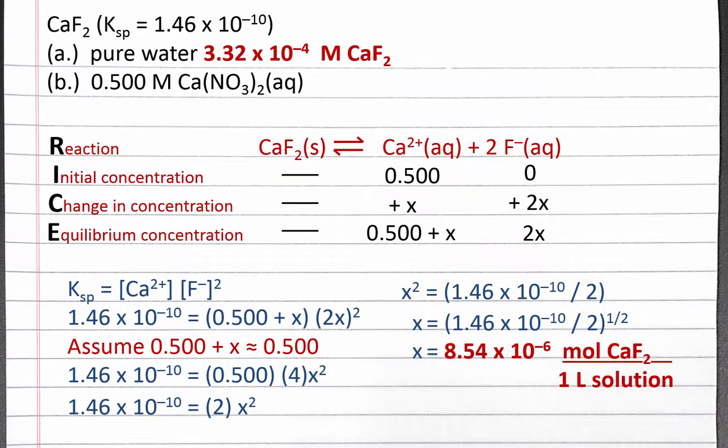Completing the calculation, we get 8.54 times 10 to the negative 6 moles of calcium fluoride per liter of solution. Our molar solubility in calcium nitrate solution has decreased compared to pure water because we already have some calcium ions in solution. This is the common ion effect on solubility.